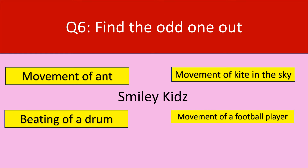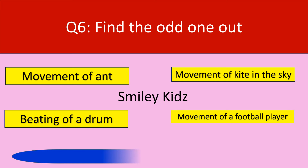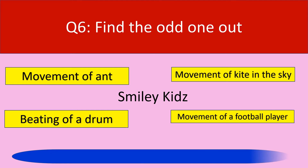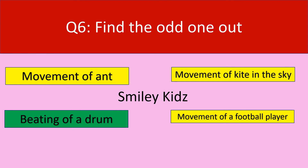Question number 6. Find the odd one out. Movement of ant. Movement of kite in the sky. Beating of a drum. Movement of a football player. Your time starts now. Time up. The correct answer is beating of a drum. Beating of a drum is a periodic motion, whereas movement of ant, movement of kite in the sky, and movement of a football player are all examples of random motion.